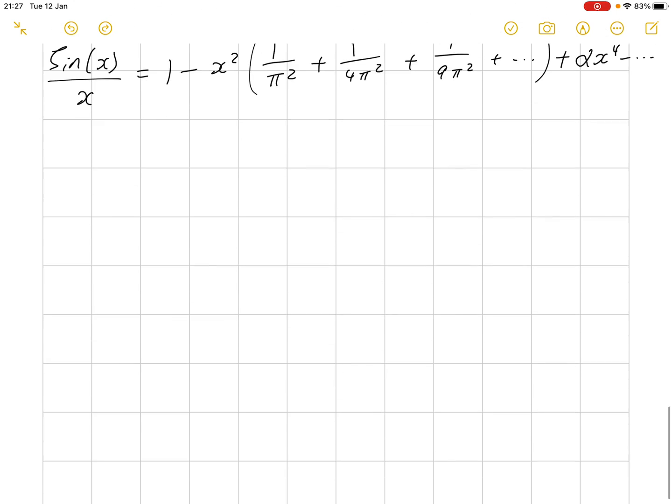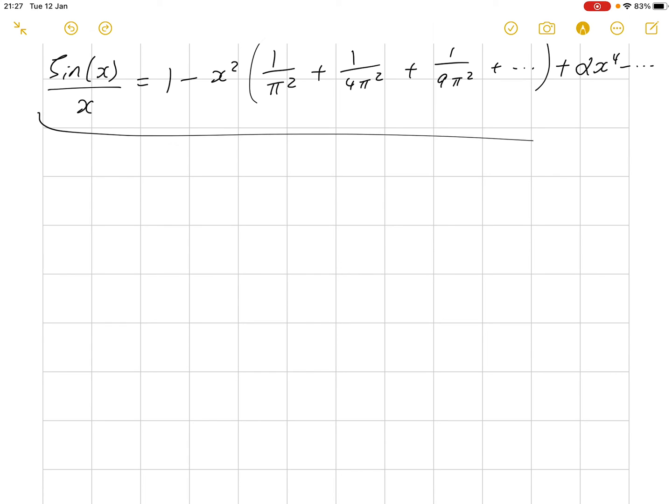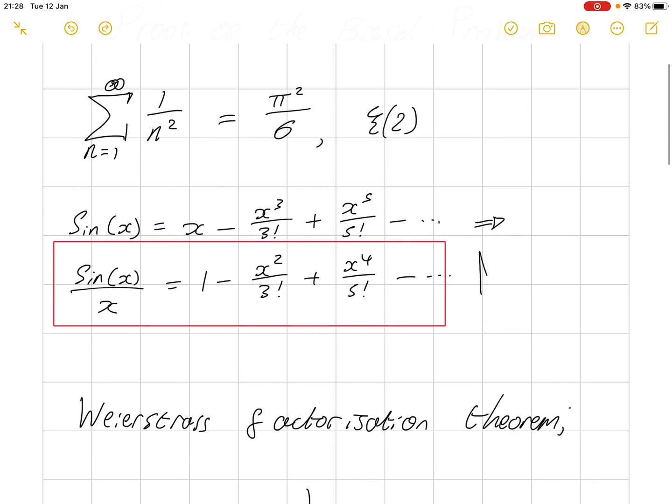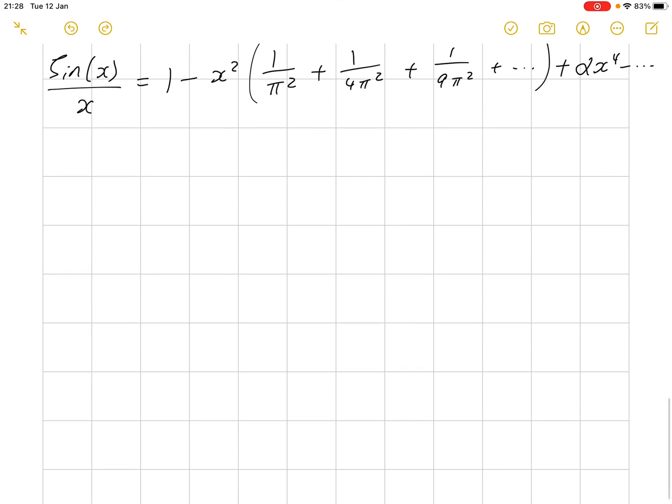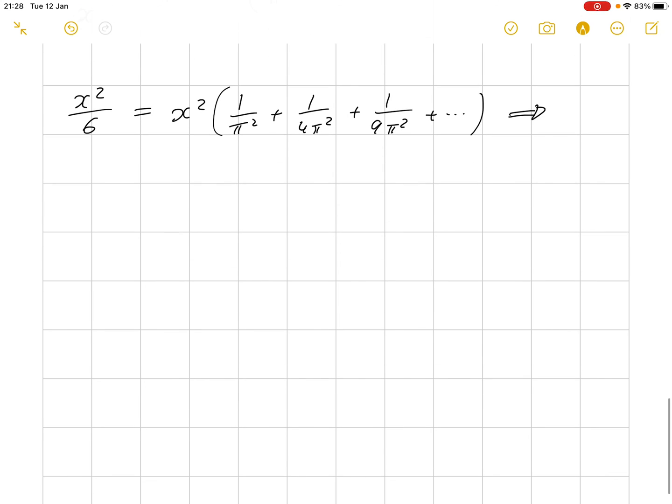So, if we compare coefficients for expansion 1 and this is expansion 2, then what we have is that the coefficient for x squared on this expansion, is 1 over 3 factorial, is 1 over 6. So, x squared over 6 must be equal to x squared times 1 over pi squared plus 1 over 4 pi squared plus 1 over 9 pi squared and so on. And so, by comparing these coefficients, it must follow, therefore, that 1 sixth is equal to 1 over pi squared plus 1 over 4 pi squared plus 1 over 9 pi squared and so on.